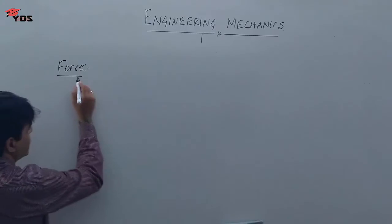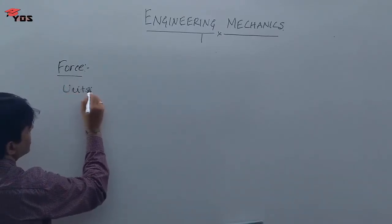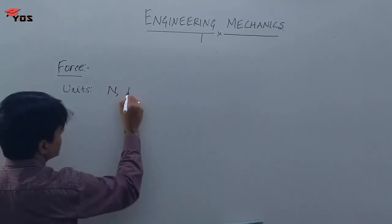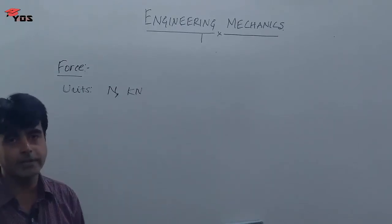So it is an external agent and what are the units? SI unit generally we use either Newton if the magnitude is very large, then we use kilo Newton and all. So, these are the units we use in engineering mechanics.